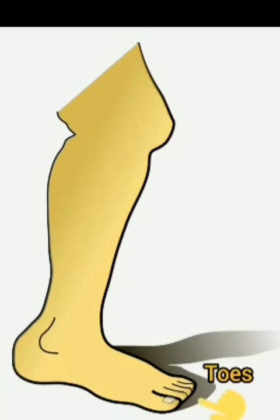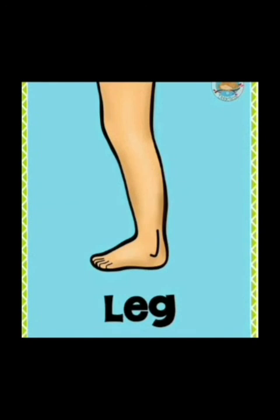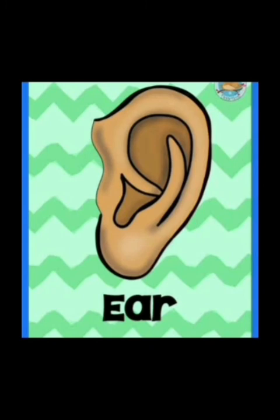Toes are part of the foot. A part of the body that is used for a particular purpose is called an organ. We use our legs for walking, so legs are organs. We use our ears for hearing, so ears are also our organs.